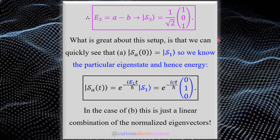What's great about this setup is that in part (a) the given initial state (0,1,0) is exactly eigenvector s₁. We know the particular eigenstate is n=1 with energy E₁ = c. Since it's already an eigenstate, the time evolution is just the phase factor e^{-iE₁t/ℏ}, so s_a(t) = e^{-ict/ℏ}(0,1,0). In case (b), we have a linear combination of eigenstates — let's examine that.